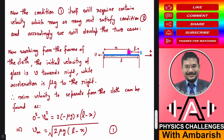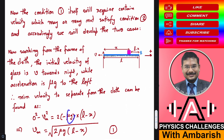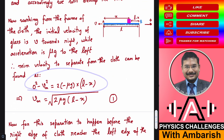Working from the frame of the cloth: initial velocity of the glass is v towards right, acceleration is mu g to the left because the cloth is rubbing it towards left. The minimum velocity to separate from the cloth is found using v² - u² = 2as. Taking rightward as positive, 0² - vm² = 2(-mu g)(L - x). Rearranging, vm = sqrt(2 mu g (L - x)). This is the bare minimum velocity required so that the glass comes off the edge of the cloth.